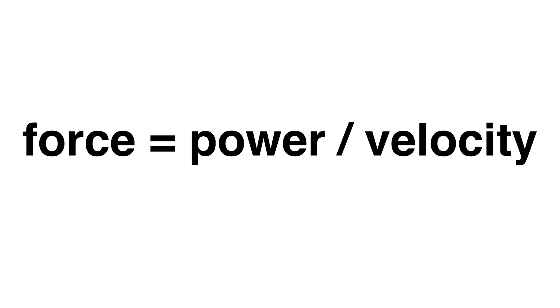Now let's invert this equation for just a moment. Force equals power divided by velocity. What does this equation tell us? It means that if the engine on the airplane behind me has a limited amount of power, the faster the airplane goes, the less force the engine is going to be able to put out.